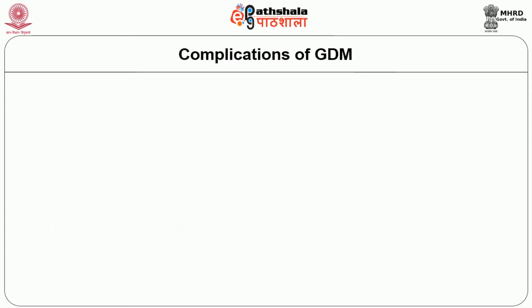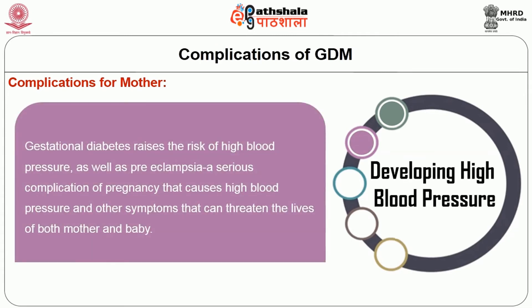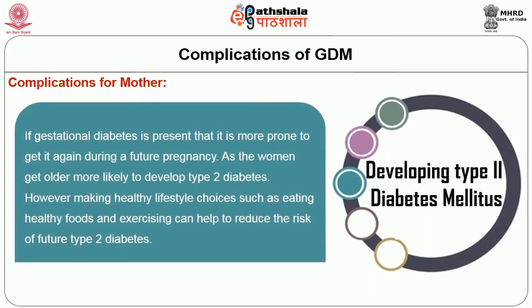Knowing the risk factors, let us now understand the complications of GDM for both the mother and the baby. For the mother, the first complication is preterm labor — when a mother's blood sugar is high, it may increase her chances for early labor. The second is developing high blood pressure. Gestational diabetes raises the risk of high blood pressure as well as preeclampsia, a serious complication that can threaten the lives of both mother and baby. The third complication is developing type 2 diabetes mellitus in later stages of life, and GDM is more likely to recur in future pregnancies.